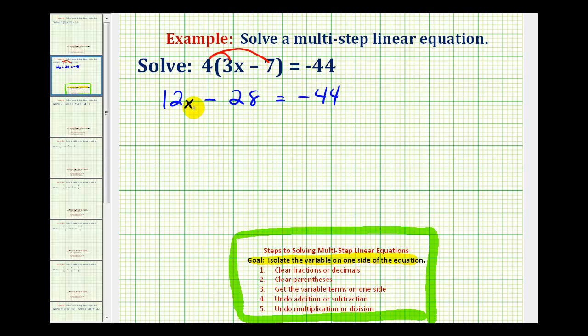Notice how we only have one variable term and it's on the left side. So our goal is to isolate the variable x on the left. To do this we have to undo the subtraction, and since twelve x means twelve times x, we'll also have to undo this multiplication. But we always want to undo the addition or subtraction before we undo any multiplication or division.